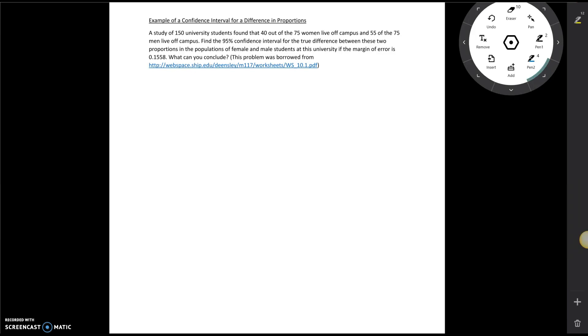Right here notice that we have two different groups: women and men. So that automatically tells me I'm probably going to be working with some kind of difference. Also notice they're asking them do they live on or off campus. So that's a categorical variable. So we're going to have a difference in proportions here.